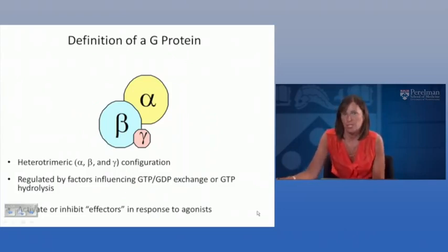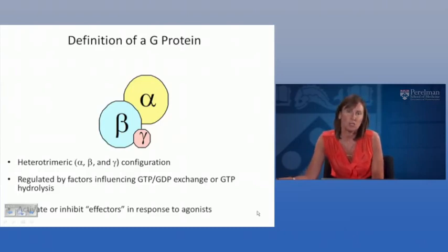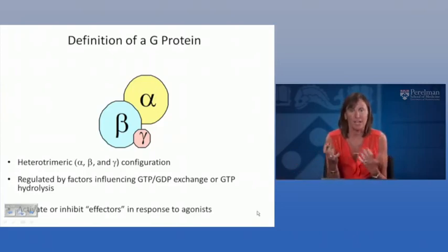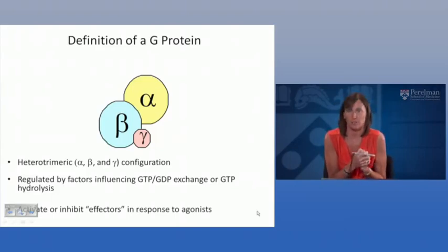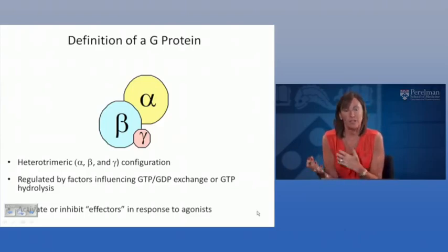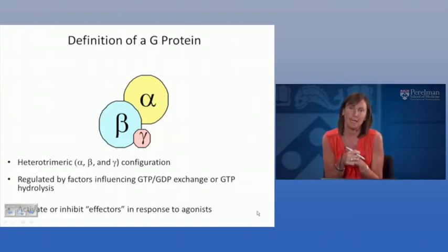Let's talk a little bit about the G-protein itself. Another term commonly used is that the G-protein itself is a heterotrimeric protein. That means it is composed of several different subunits: an alpha, a beta, and a gamma subunit. These are in a naturally occurring configuration when the receptor is in its inactivated form, so the three subunits are associated together. The subunits are regulated by factors influencing the dynamic between GTP and GDP and energy exchange, or hydrolysis of GTP itself. G-proteins activate or inhibit factors in response to agonists, turning on or turning off a second messenger pathway resulting in a pharmacodynamic effect.